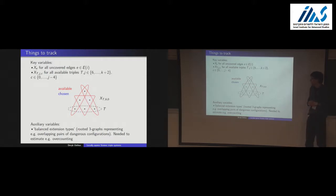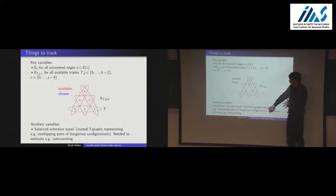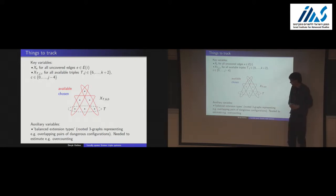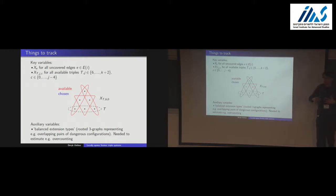That was the main challenge of the proof: finding the right set of random variables to track and being able to stop before tracking an ever-larger set. In some sense it's enough to have the order of magnitude of the variance of pairs of these configurations — a kind of variance calculation. That's all I wanted to say about the proof.